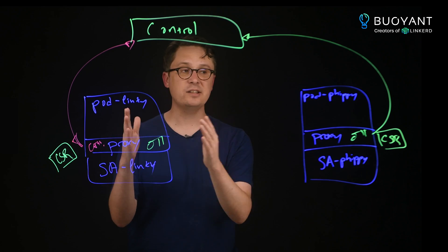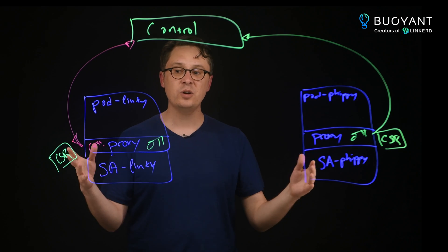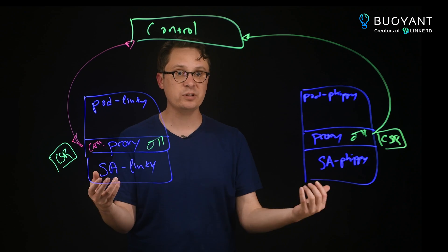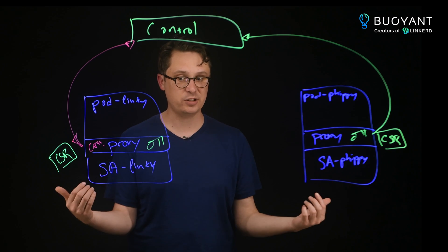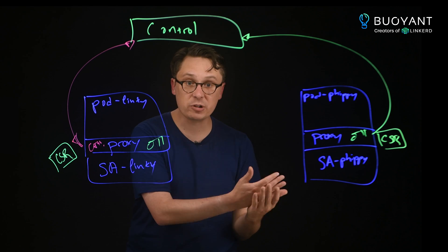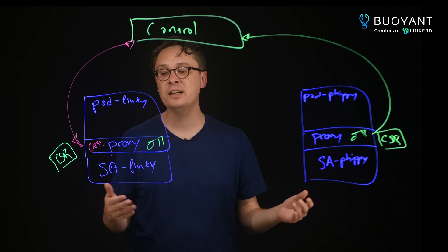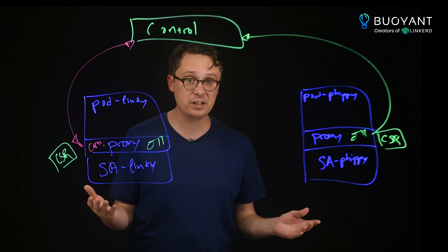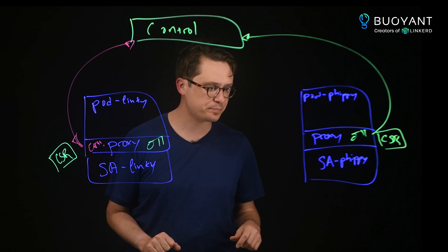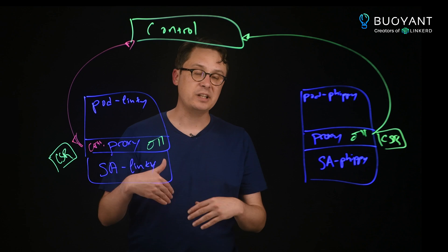Then as Linky calls FIPI or FIPI calls Linky, they can use these certificates to establish mutual authentication. So the Linky pod knows that it's talking to the FIPI pod — cryptographically, we have cryptographic proof. We don't have to rely on pod IPs or anything like that metadata. And this works by talking to the control plane.